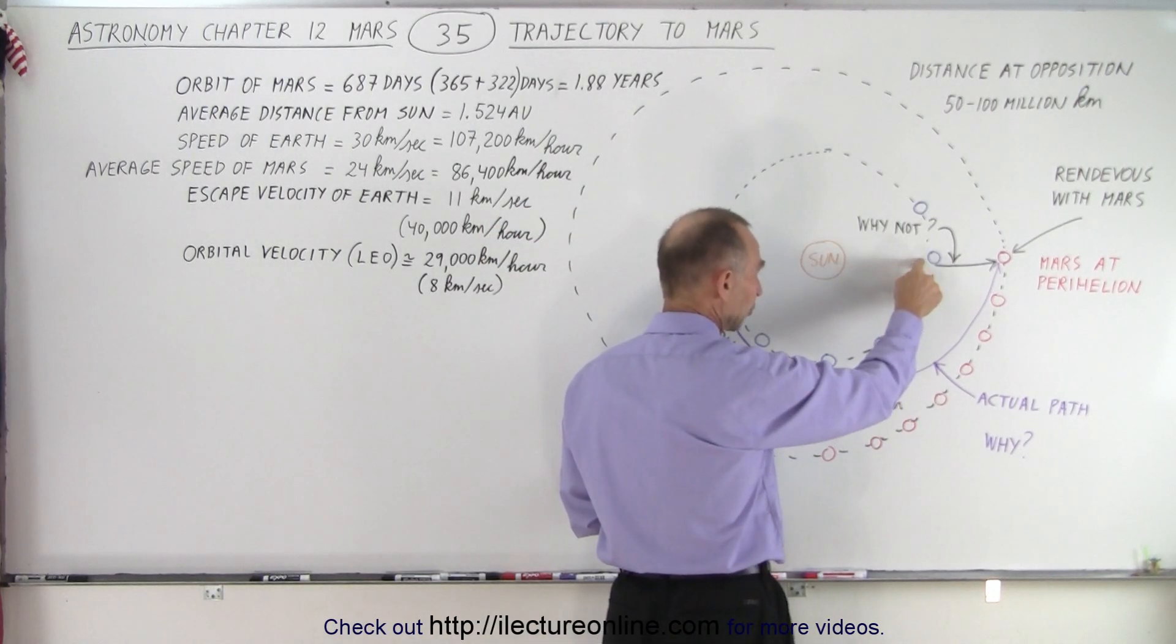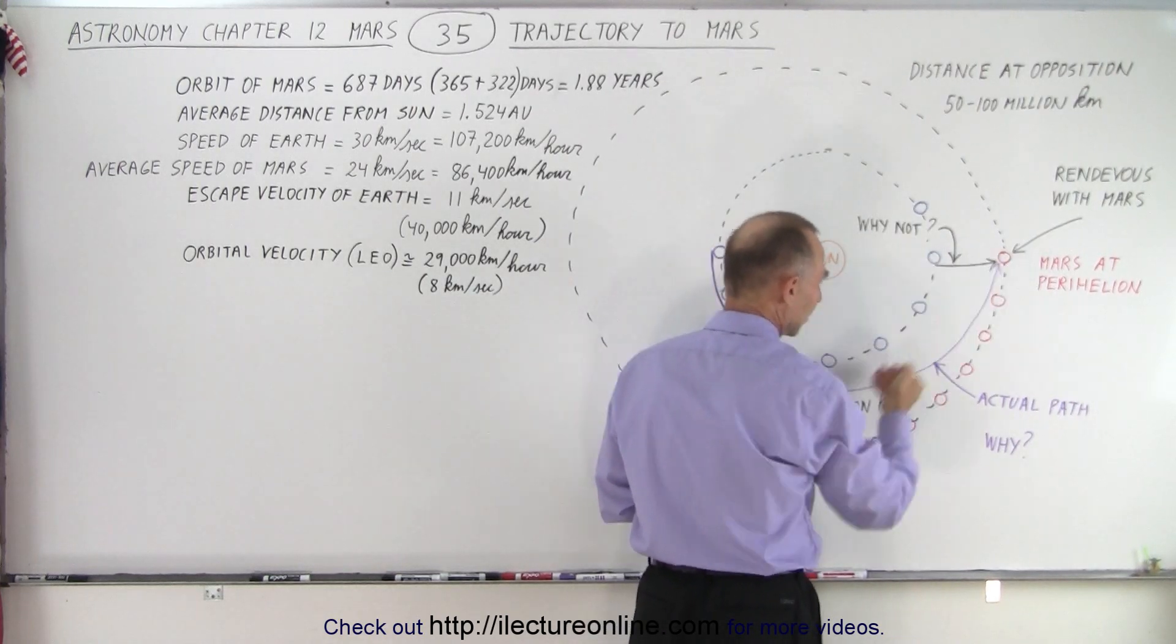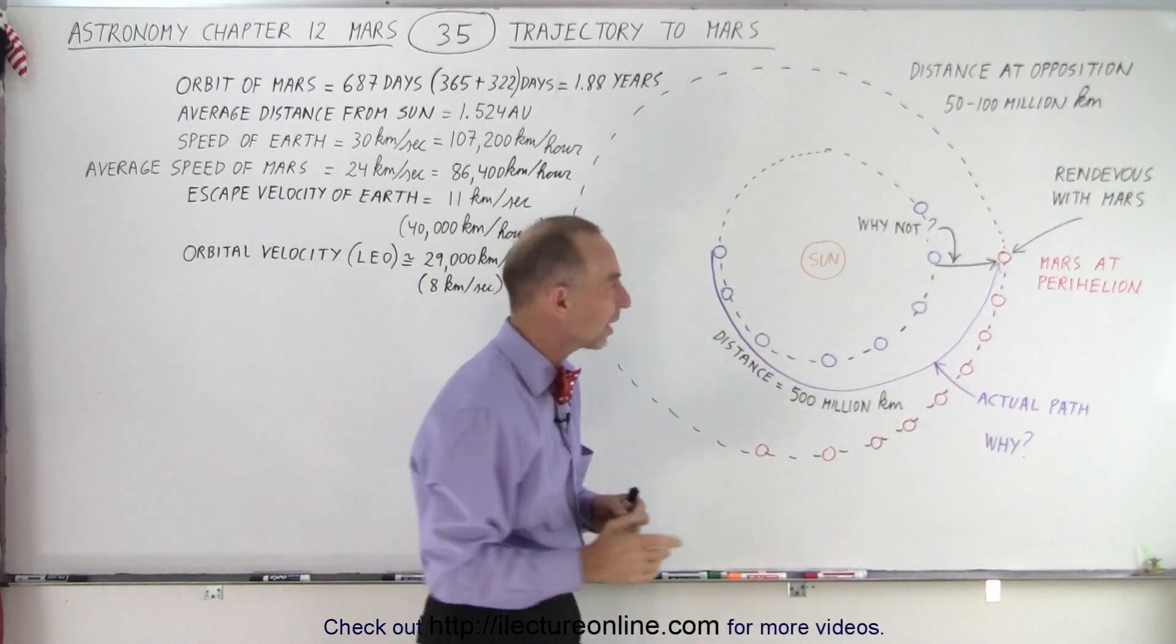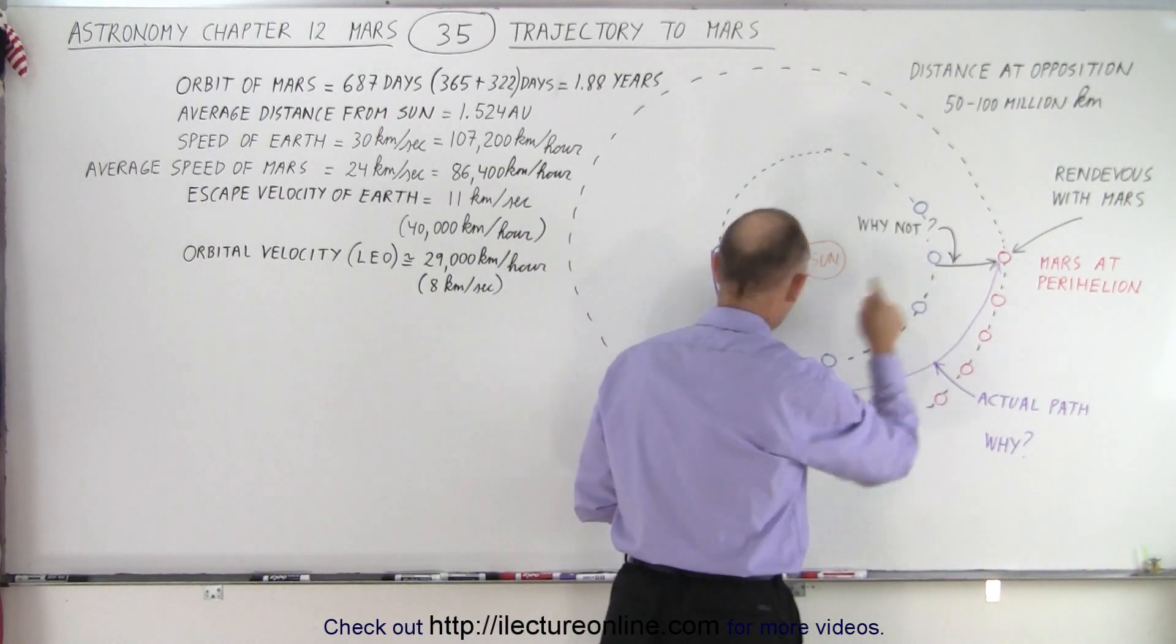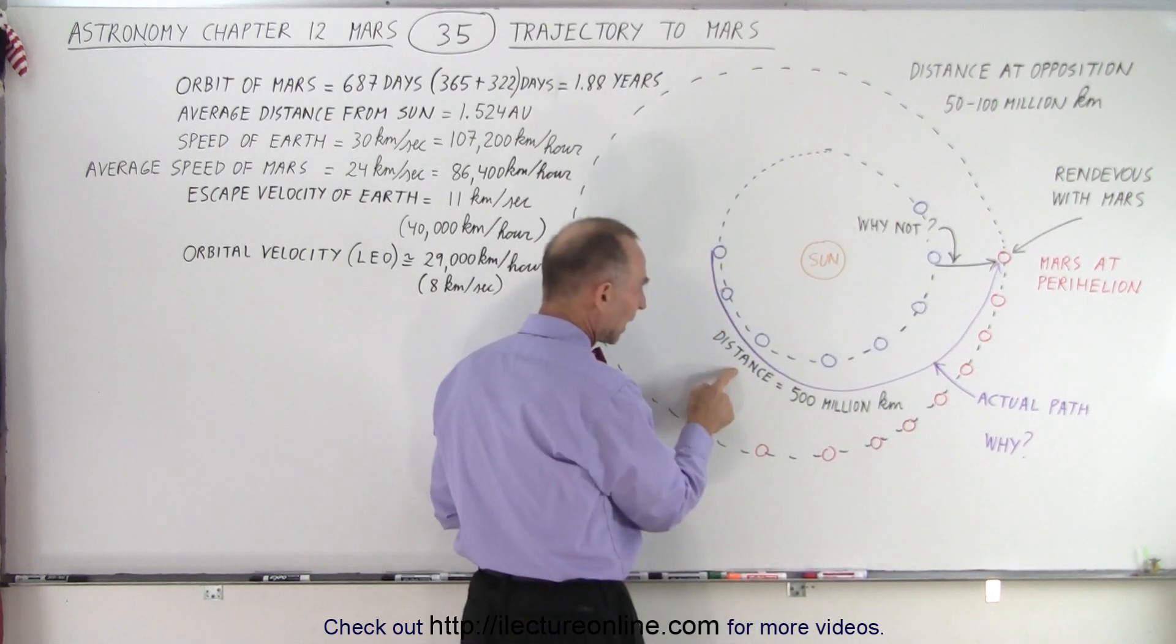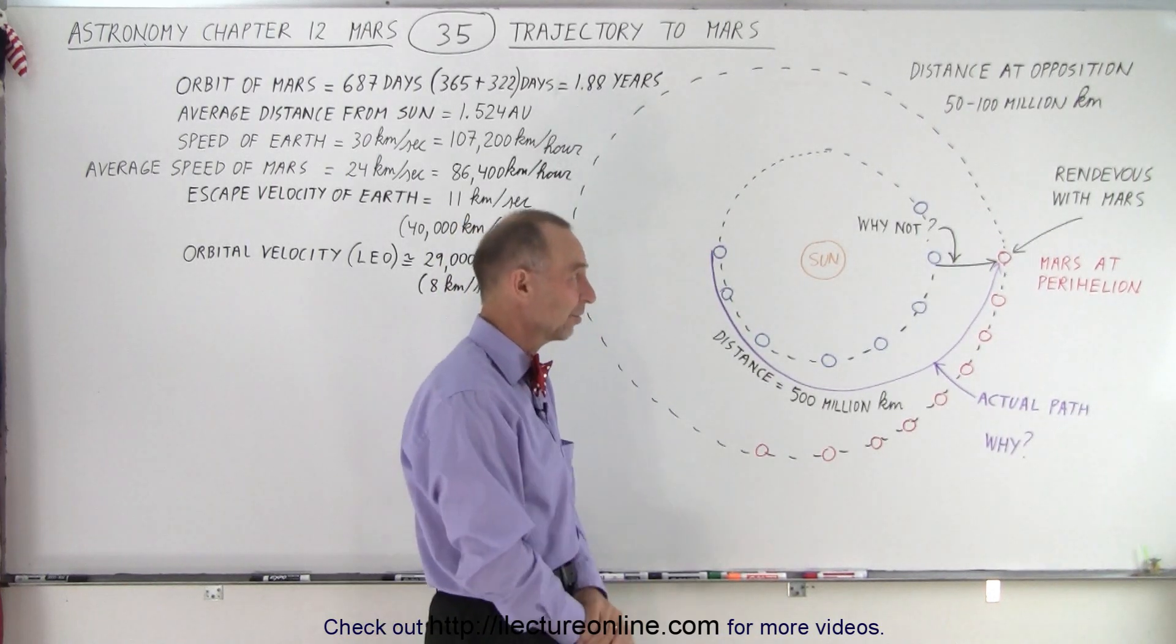Of course, what we could do is have the Earth over here, have Mars over here, and by the time the spacecraft makes it over here, Mars will be caught up to it and it will meet right there. So why don't we send the spacecraft this way? Why do we do it according to this line right here? Notice this way, it's a distance of 500 million kilometers, so that doesn't appear to make a lot of sense.